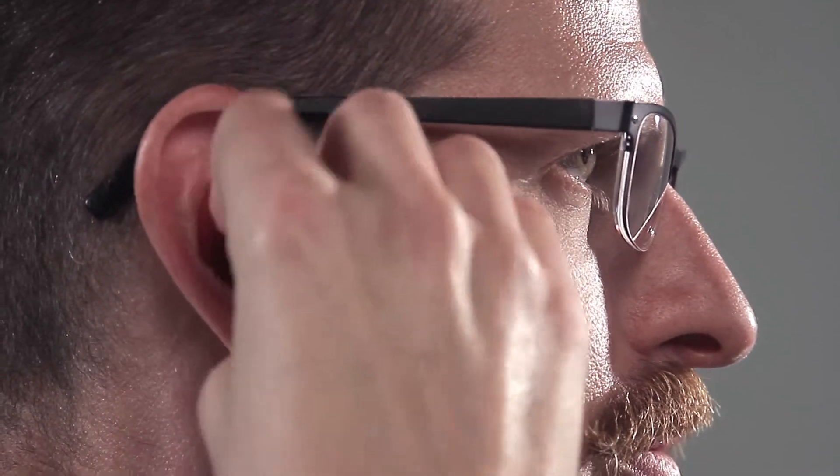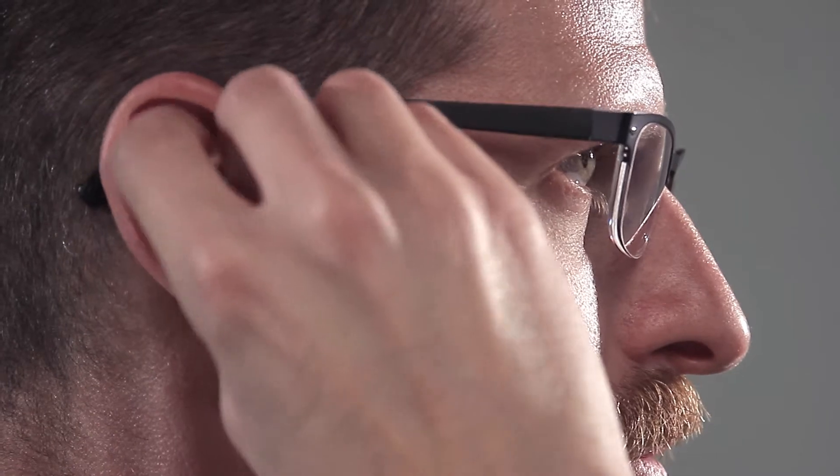Hold the earbud so that the wing is toward the back of your ear. Insert the ear tip into the ear canal. Now push the wing under the upper ridge of the bowl of your ear. That's it!